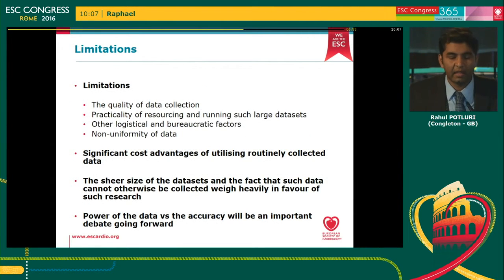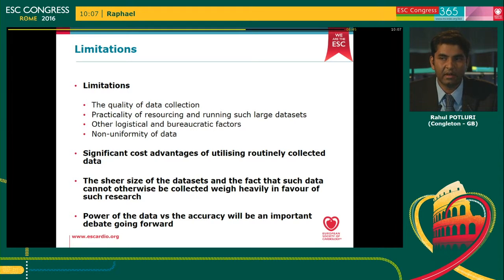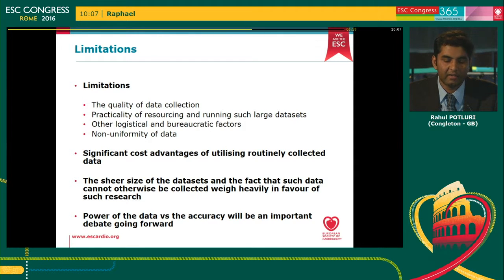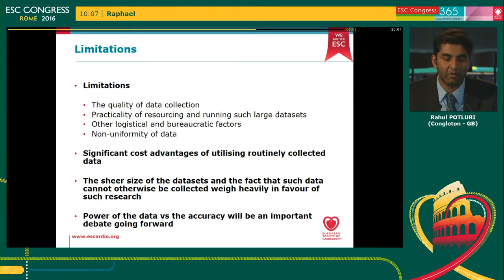There are limitations. The main limitation is the quality of data collection. Studies have shown that the data is around 80 to 90 percent accurate nowadays — by no means 100 percent. But a number of validation studies have been done showing that such data can be taken seriously. Given the millions of data points we're talking about, one argument going forward over the next five to ten years is the power of the data we have in these data sets versus the accuracy. There will be many skeptics about accuracy, and this is a big argument that needs to be addressed systematically as we go forward with big data.